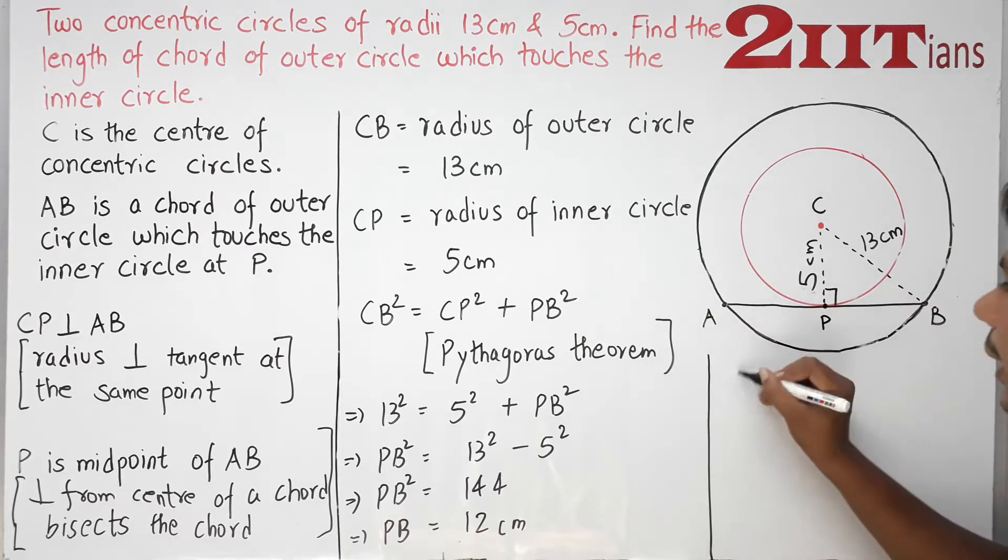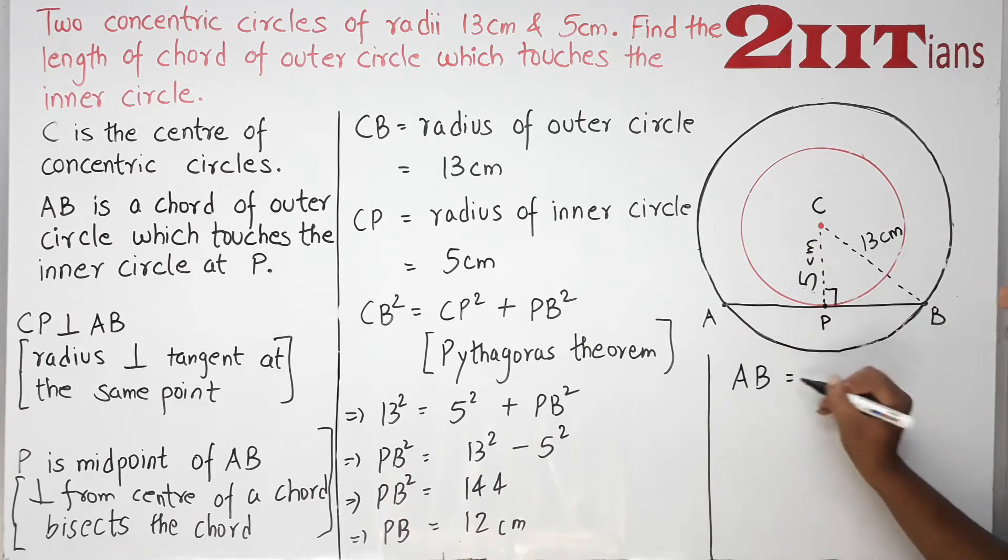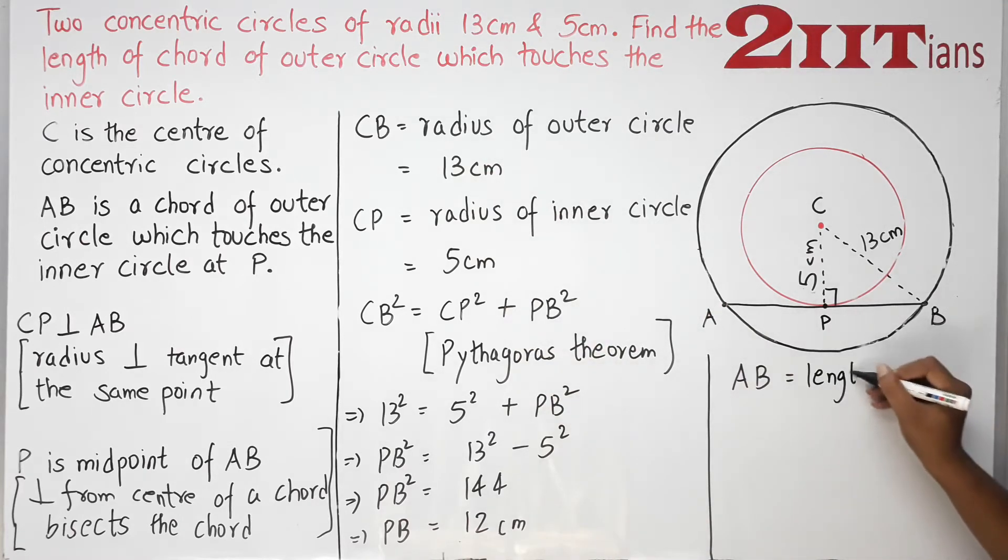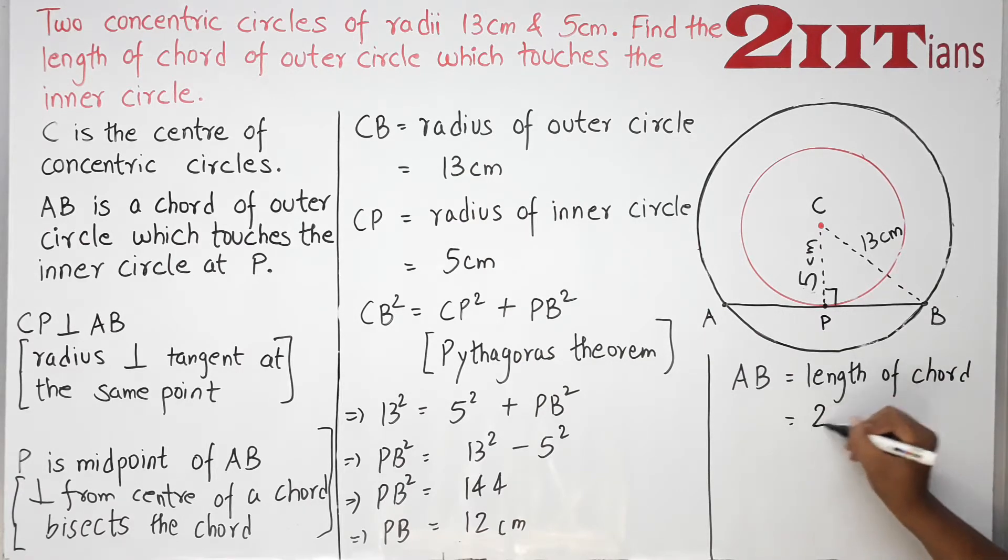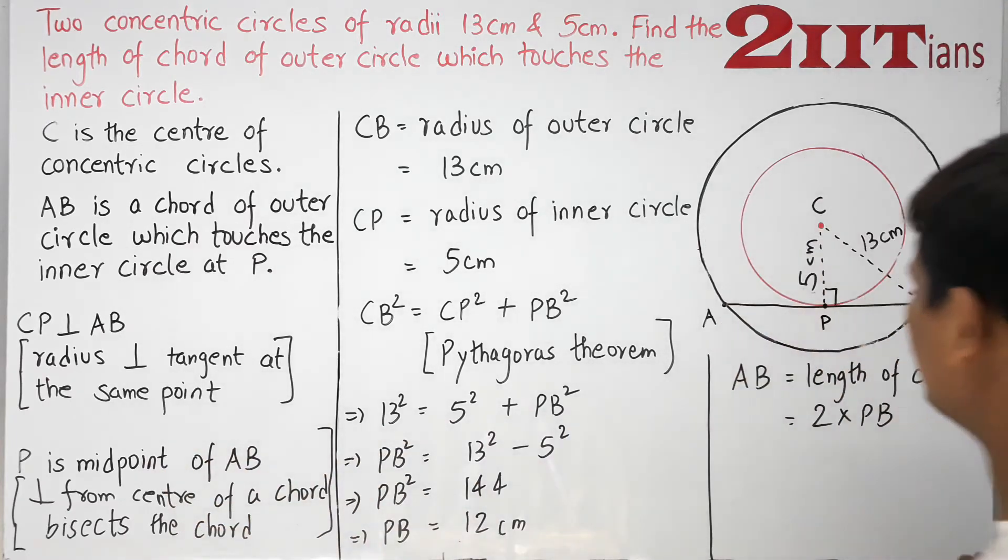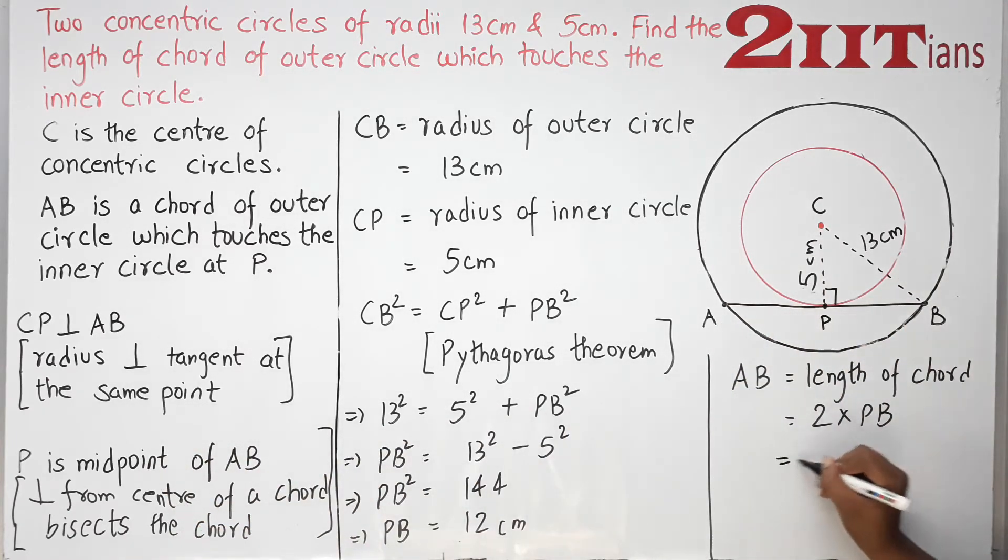Our goal is to find AB. AB is the length of chord = 2 × PB, because P is the midpoint of AB. 2 × 12 = 24 cm. So the length of chord is 24 cm.